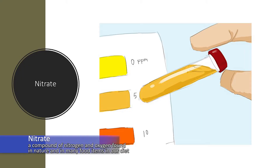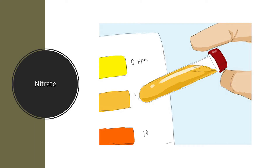Nitrate is a nutrient needed by all aquatic plants and animals to build protein. Nitrate is released into the aquatic system by the decomposition of dead plants and animals and the secretions of living animals. Excess nutrients like nitrate increase plant growth and decay, promote bacterial decomposition, and therefore decrease the amount of oxygen available in the water. Sewage is the main source of excess nitrate added to natural waters, while fertilizers and agricultural runoff also contribute to high levels of nitrate.